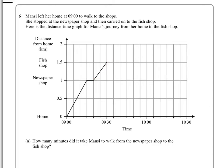For part A, it says how many minutes did Mansi take to walk from the newspaper shop to the fish and chip shop? It took her that long — two of these blocks. If this is 9 and that's 9:30, each of these blocks must represent 5 minutes.